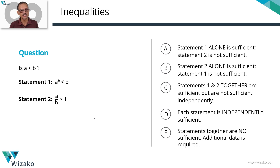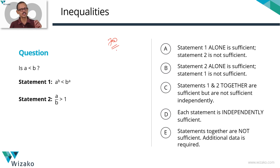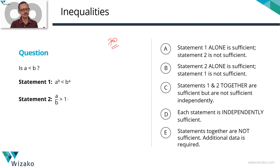This is a GMAT data sufficiency sample question at the 700 level. This practice question is from the topic of inequalities, focusing on the concept of inequalities applied on exponents — a power b and b power a.